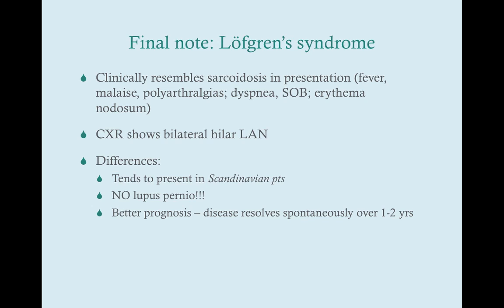The major difference with Lofgren syndrome is that these patients do not develop lupus pernio. So if the patient doesn't have lupus pernio, you may not be able to distinguish Lofgren syndrome from sarcoidosis. A patient with sarcoidosis doesn't necessarily have lupus pernio at that moment, but with Lofgren syndrome they will never develop it — so if they do have lupus pernio with these symptoms, it is definitely sarcoidosis. Most importantly, Lofgren syndrome has a better prognosis; it tends to resolve spontaneously over one to two years, whereas sarcoidosis does not.